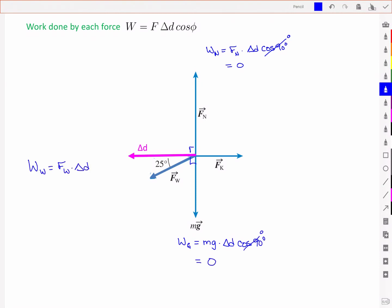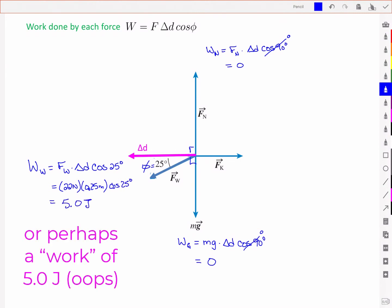The work by the applied force is the force times the displacement delta D, and the angle between the two, which here is a cos of 25 degrees. So remember, this is my phi here of 25 degrees. That means I have 22 newtons, 0.25 meters was the displacement given, and a cos of 25 degrees to give me 5.0 joules. I'll use two significant figures to match the numbers provided.